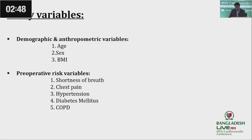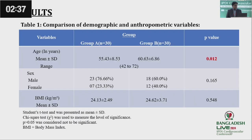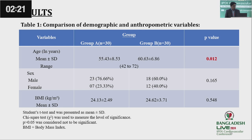On the basis of literature review and our experience, we selected some variables to be studied, which we will go into briefly in the results section. Comparing demographic and anthropometric variables — age, sex, and BMI — only age distribution was found to be statistically significantly different between the two groups.